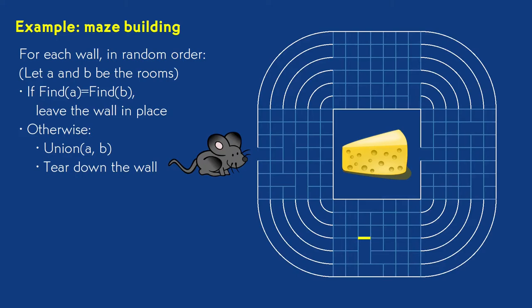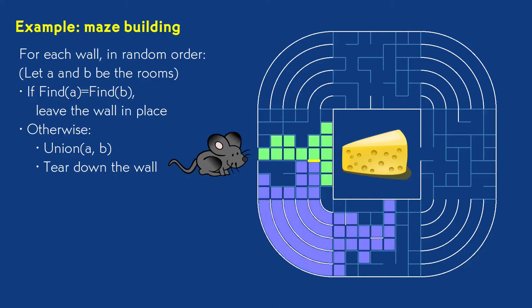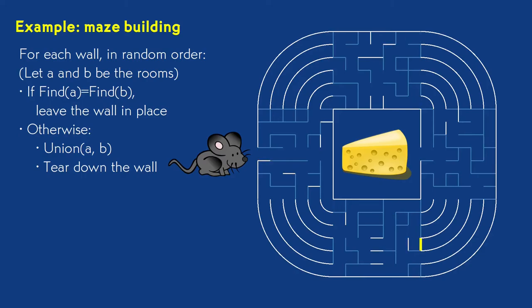The first bunch of checks will usually union isolated rooms and merge them into pairs. Then we start encountering mergers that produce larger groups. We leave any walls standing that has the same component on both sides. If we were to remove the yellow wall, we'd introduce a cycle into a path through the maze. As we tear down more walls, we merge ever larger groups into one another.